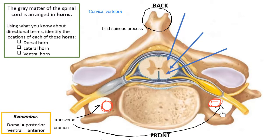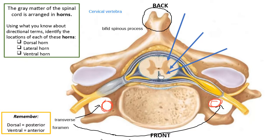So if you look at a vertebra and it has a bifid spinous process with two branches and two spaces with blood vessels inside them, those two things tell you it's a cervical vertebra. Looking at the spinal cord in the neck region, I can see the spinal cord on the inside and the bony structures around it. The back or dorsal side of this model is where I see the spinous process.